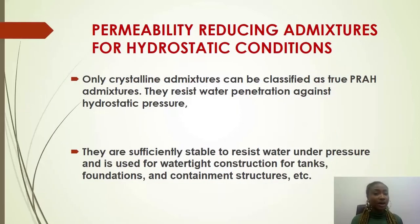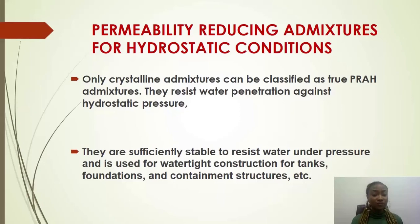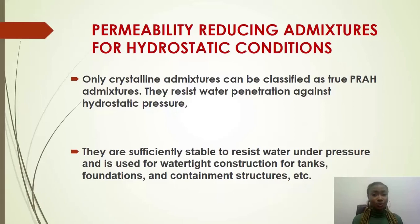The next category is the permeability-reducing admixture for hydrostatic conditions, or PRAH. Under this, we have only crystalline admixtures — there is no other waterproofing admixture under this classification. Only crystalline admixtures can be classified as true PRAH. They resist water penetration against hydrostatic conditions, are sufficiently stable to resist water under pressure, and are used for watertight construction of tanks, foundations, and containment structures. These admixtures can be used below and above grade, though we recommend them more below grade because of the higher water pressure.